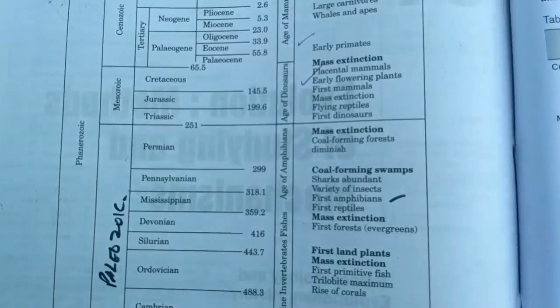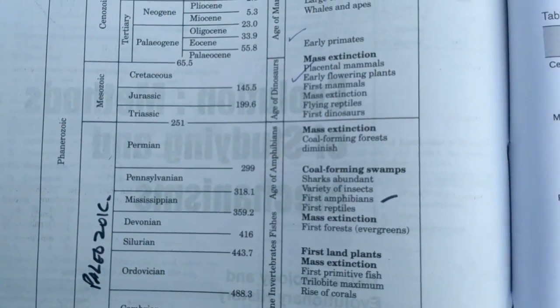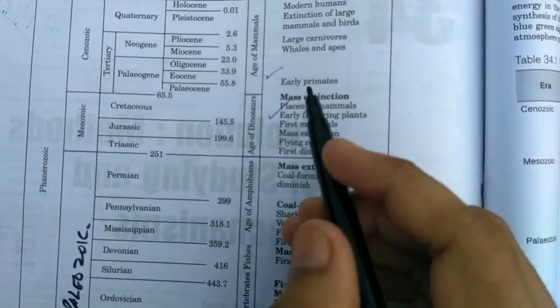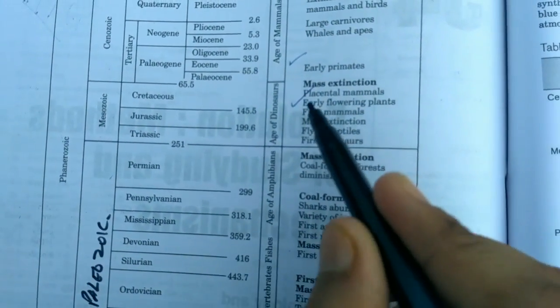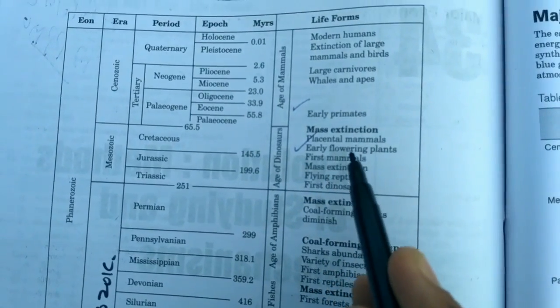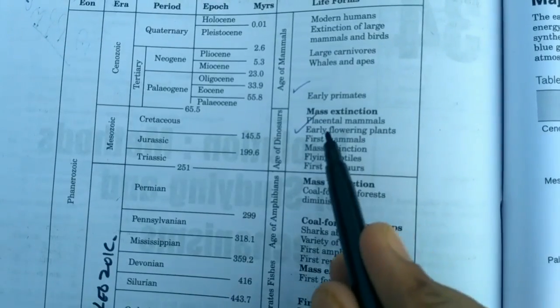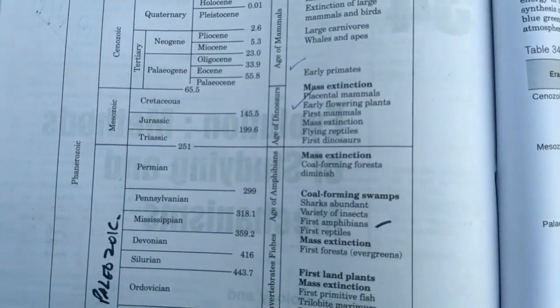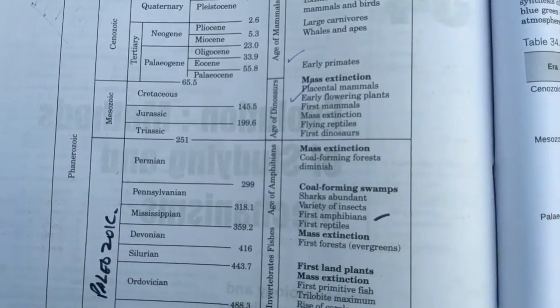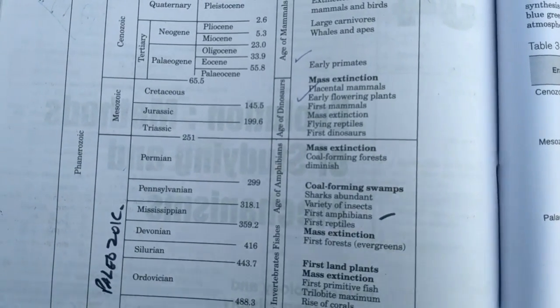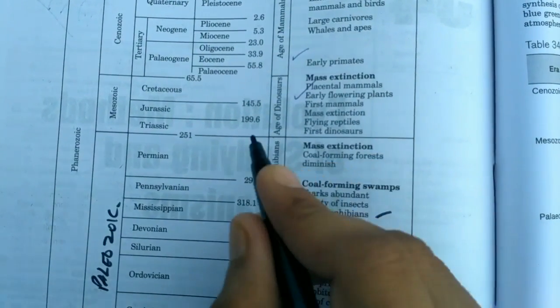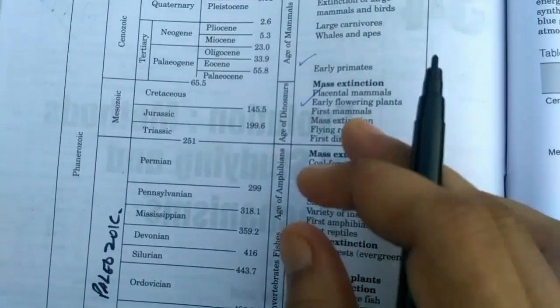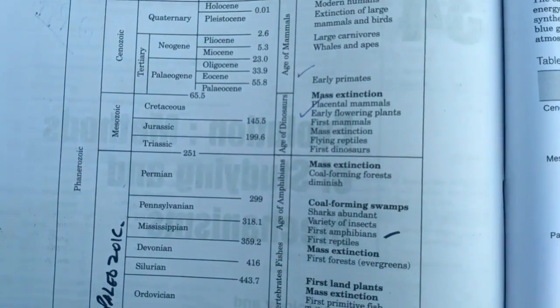Later on, the second era is Mesozoic. It has three periods: Triassic, Jurassic, and Cretaceous. It can be regarded as the age of dinosaurs. In Triassic: first mammals, early flowering plants, mass extinction, flying reptiles, and first dinosaurs are appearing. In Triassic, Jurassic, and Cretaceous, dinosaurs are disappearing and mammals are being formed.